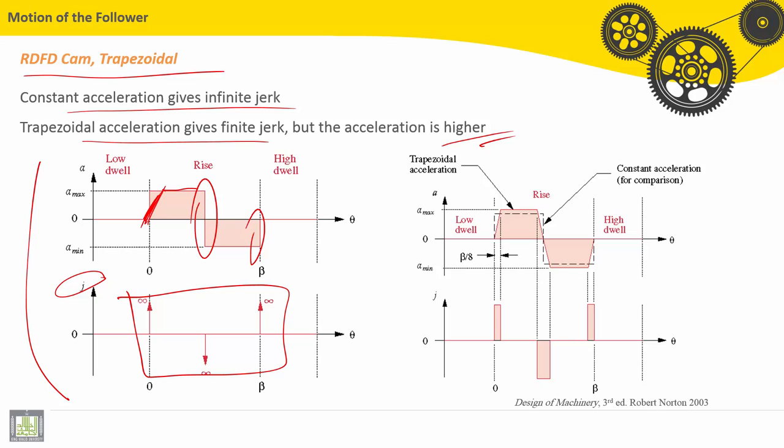for transition period between low dwell to rise or rise to fall phases or fall phases to high dwell transitions, as shown here, this slope here and here and here also,